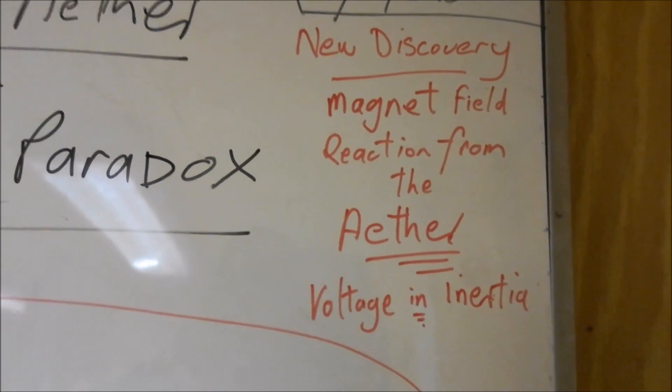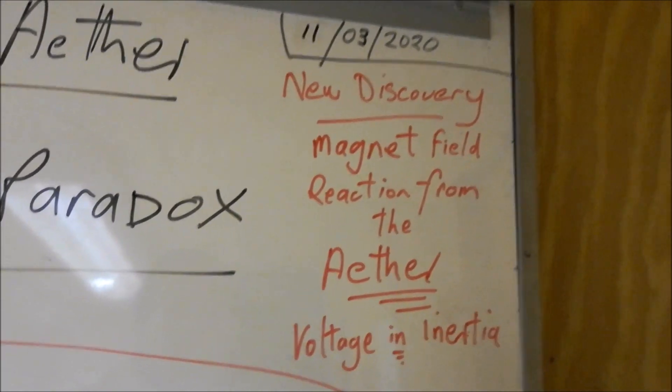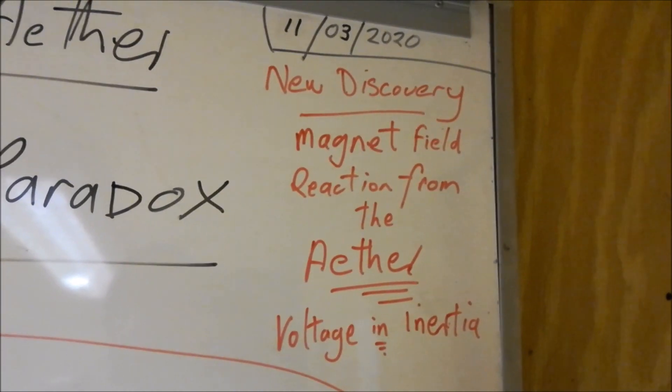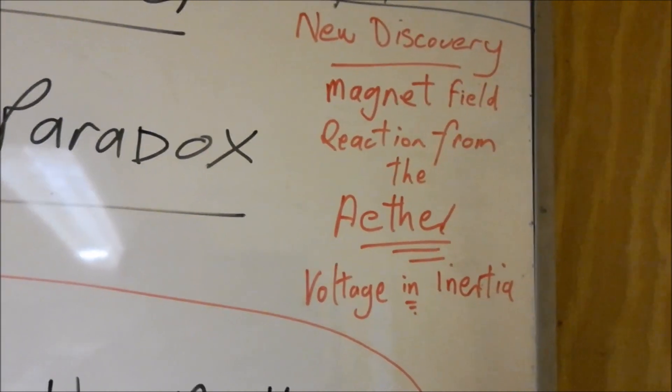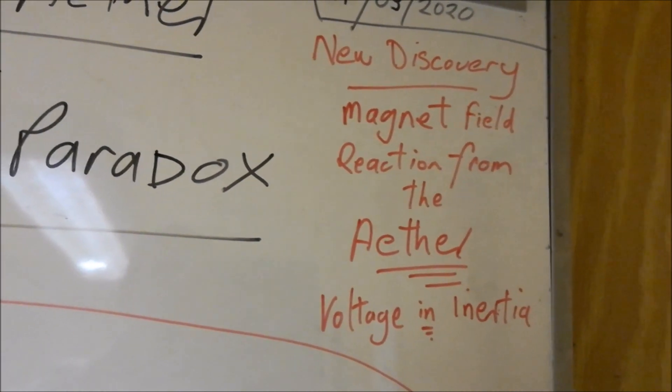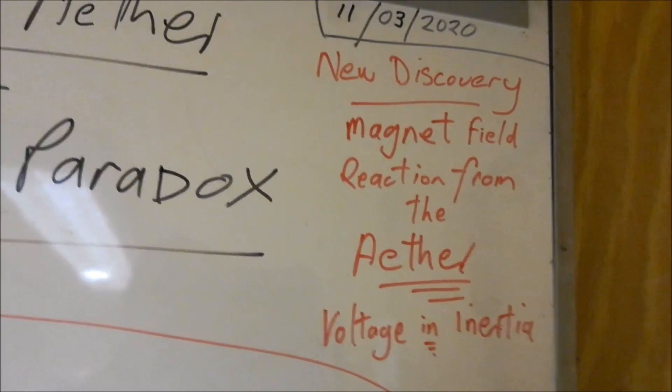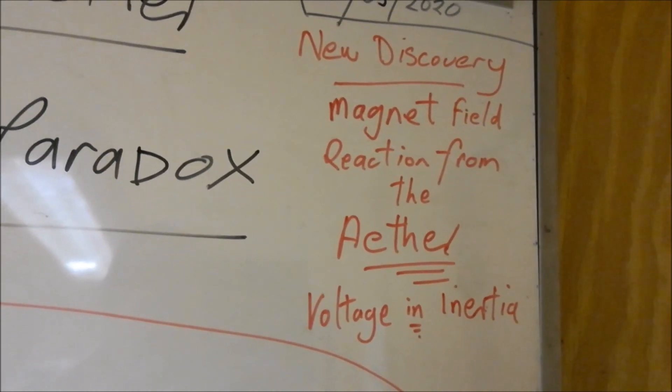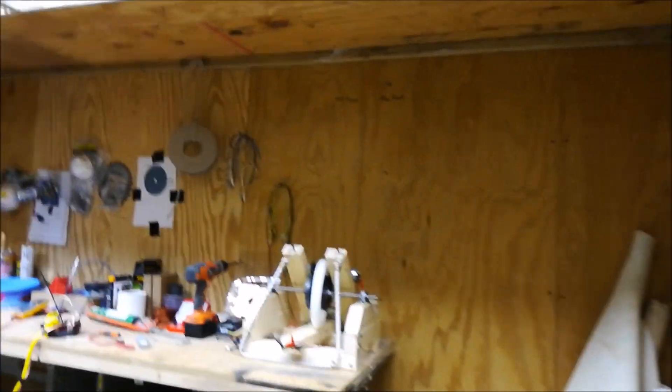But today, I've come up with a very simple, very basic experiment which proves that there is Nikola Tesla's Aether, without shadow of doubt. So we'll go and have a look at what's going on.